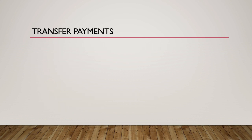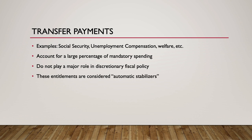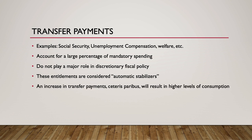Transfer payments such as Social Security, unemployment compensation, and welfare represent a large part of mandatory spending and are written into the law. While these transfers represent a large part of the budget, they do not play a major role in discretionary fiscal policy. Instead, these programs are considered to be automatic stabilizers. If the federal government increases transfer payments, ceteris paribus, this will result in higher levels of consumption and will therefore increase aggregate demand.